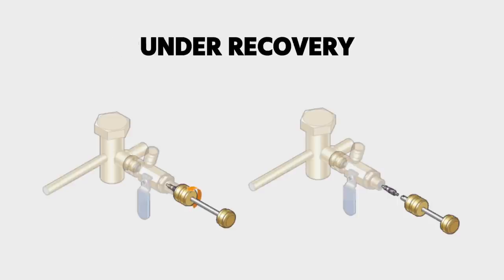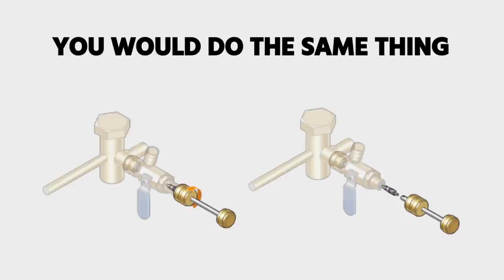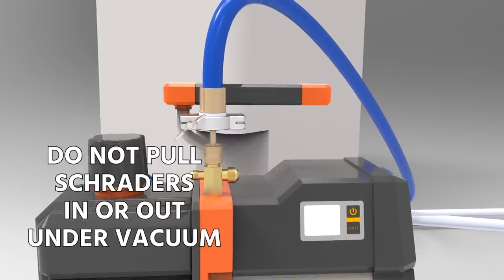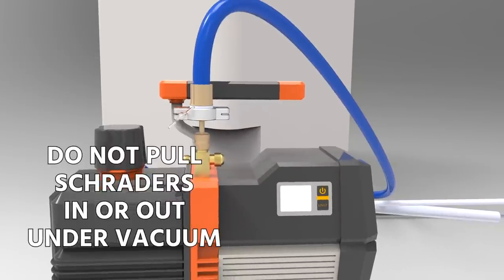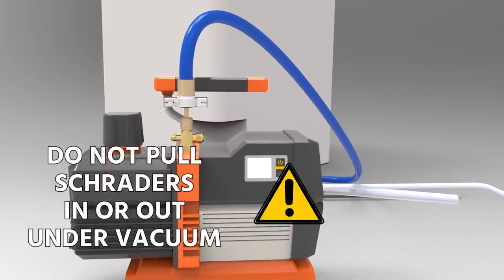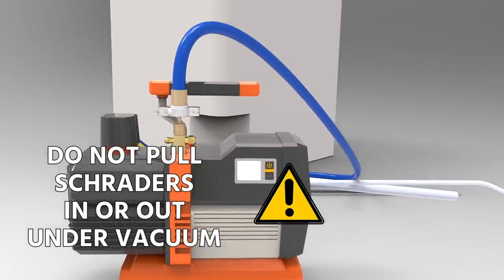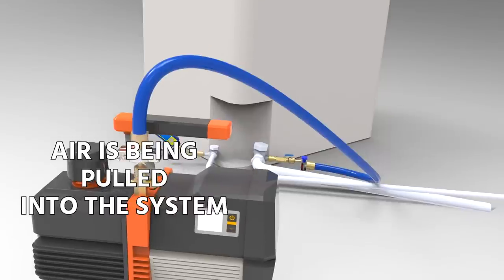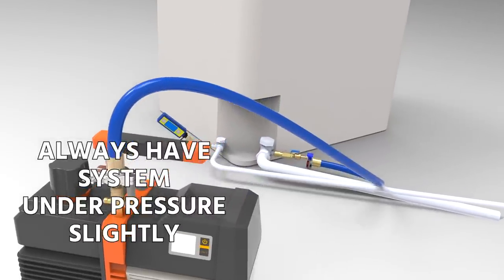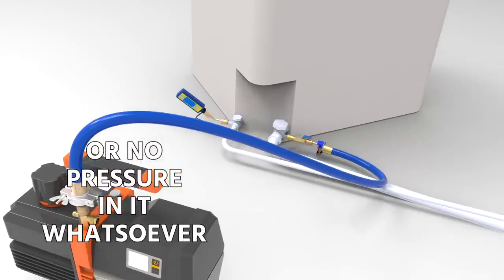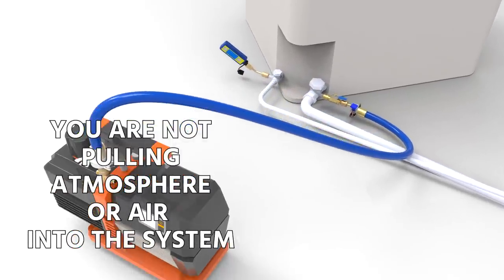Like I said, under recovery, you would do the same thing. You're going to recover refrigerant and pull it out for that purpose. One really key thing here is you do not want to pull Schraders in and out under vacuum. I'm going to say that again, do not pull Schraders in or out under vacuum because under vacuum, you will have some air that's pulled into the system, and we don't want that. You always want to have the system under pressure slightly when you do this or having no pressure in it whatsoever. That way you're not pulling atmosphere or air into the system.